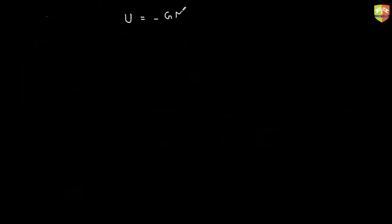What we have learned is that the potential energy between two masses is minus G m M by r. This is the potential energy between two point masses or two uniform spheres separated by a distance r.